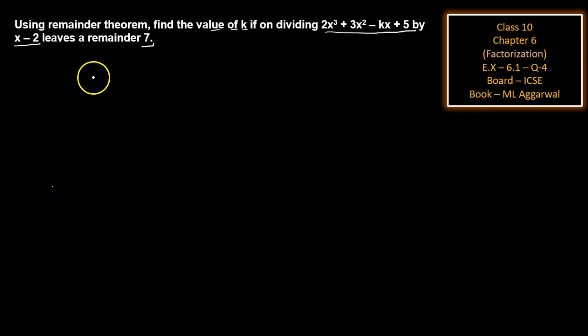The remainder theorem states that when we put the value of x from the divisor into the polynomial or dividend, we will get the remainder.